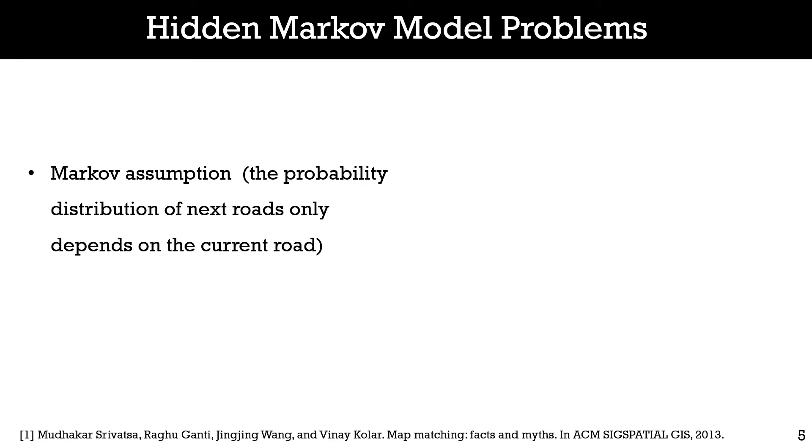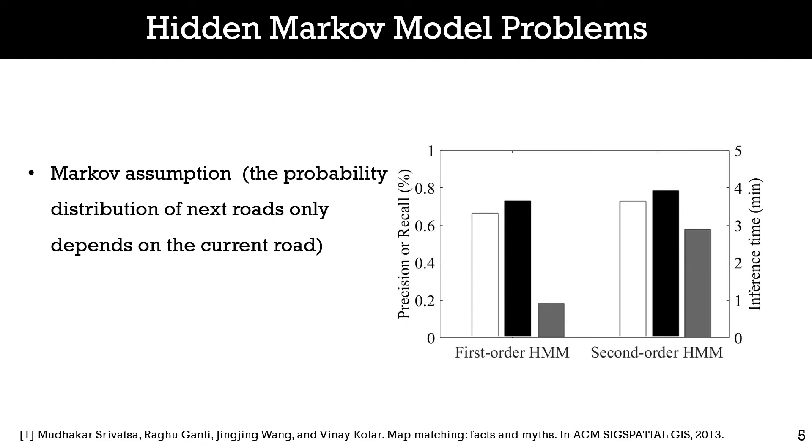However, the hidden Markov models suffer from two problems. First, they rely on Markov assumption to simplify the problem. Specifically, they assume the probability distribution of the next road only depends on the current road. But just considering the last road leads to loss of information. We conducted an experiment to validate this. We implemented two hidden Markov models with first order and second order location information. As shown, the accuracy of the second order matching model performs better than the first order model. But if we increase the order of hidden Markov models, the inference time will significantly increase.